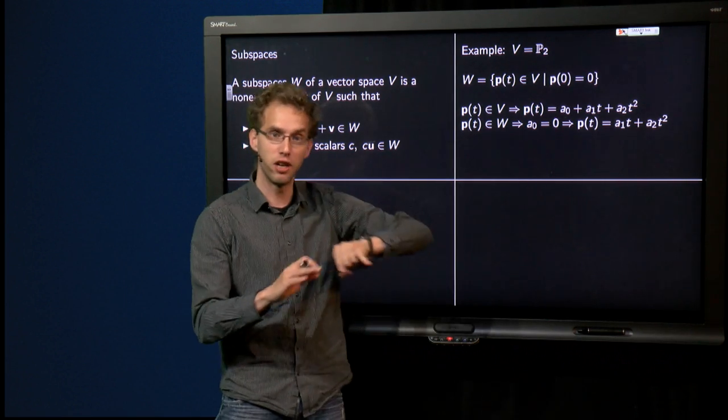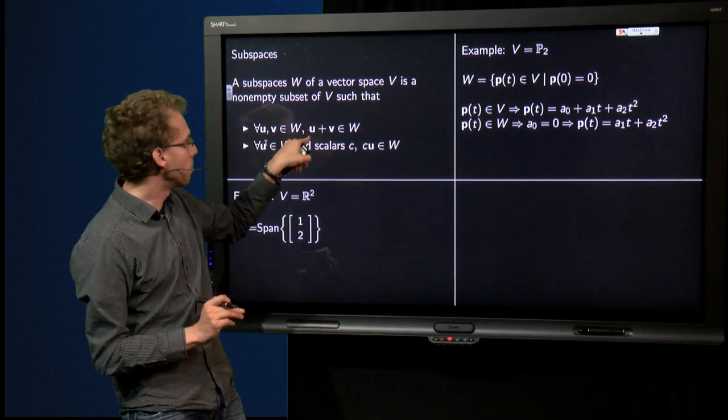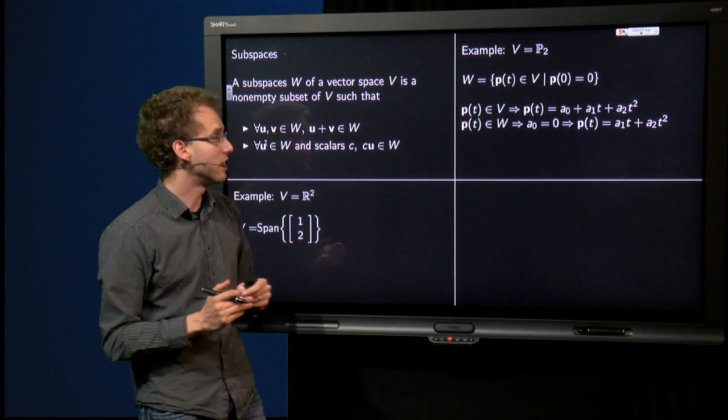It is non-empty because the zero polynomial is in W. Let us see whether those two properties over here are satisfied.